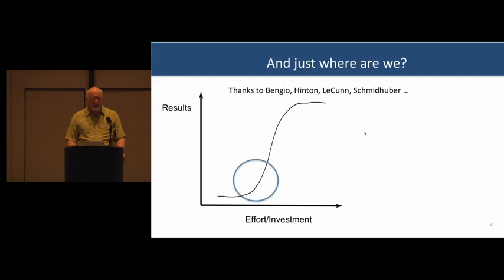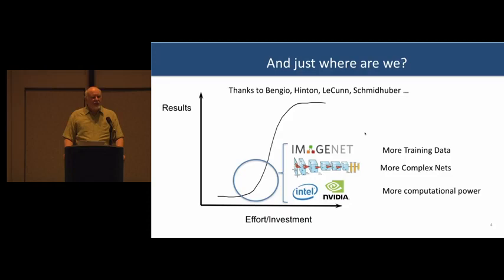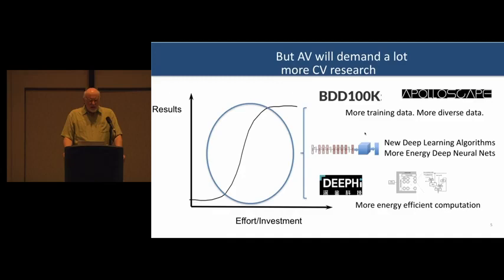What are those things? We've heard them all before. We've got a lot more data through ImageNet, we have more complex nets like AlexNet, and we have a lot more computational power due to Intel and NVIDIA. So looking forward, if we really want to do autonomous driving, we're going to need a lot more computer vision research. I'm going to organize my talk around these challenges in the same three categories: more data, newer deep learning algorithms, and more energy-efficient computation.